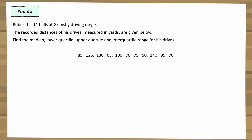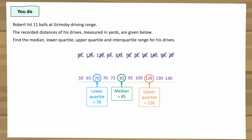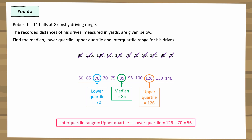Here's the solution. First, put them in order — very important — cross them off, and double-check we have all 11 values. The median is the sixth value, which is 85. There are five numbers on the left-hand side, so the lower quartile is simply 70. The upper quartile is the median of the right-hand side, which is 126. The interquartile range is upper quartile subtract lower quartile, which is 56.